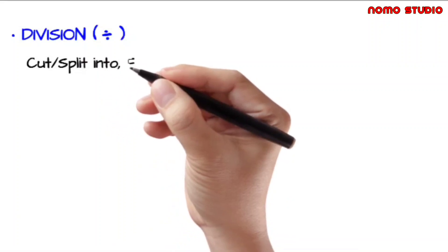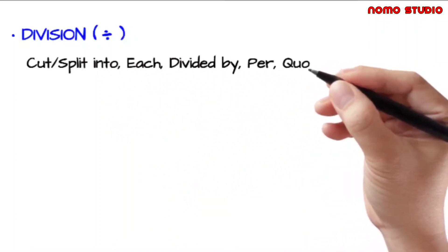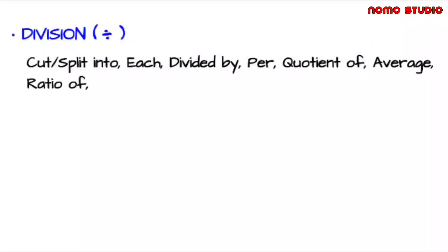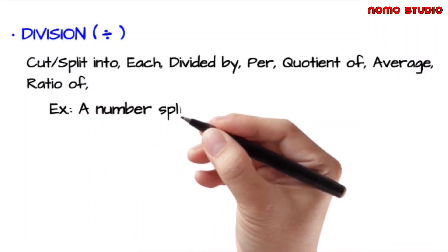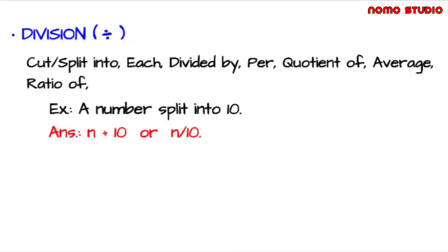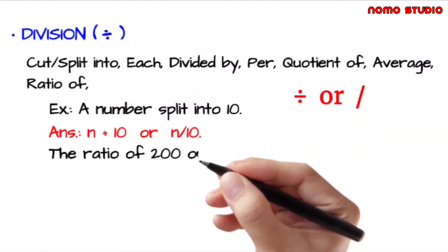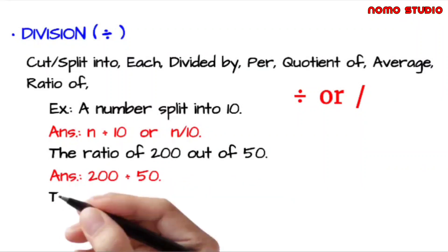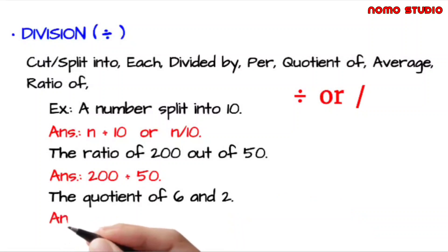Lastly, we have division. The most common words used are: cut or split into, each, divided by, per, quotient of, average, and ratio of. For example, a number split into 10 simply means n divided by 10 — the division sign can either be the division symbol or a slash. The ratio of 200 out of 50 is just 200 divided by 50. The quotient of 6 and 2 is just 6 divided by 2.